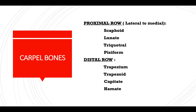Carpal bones — proximal row from lateral to medial: scaphoid, lunate, triquetral, pisiform. Distal row: trapezium, trapezoid, capitate, hamate.